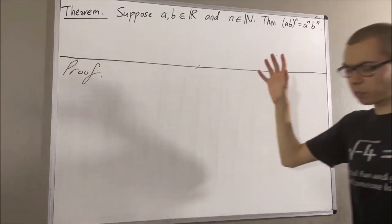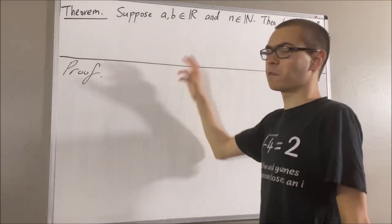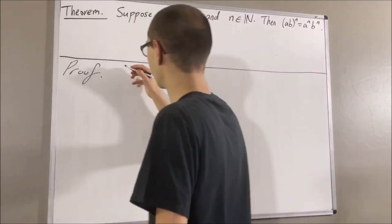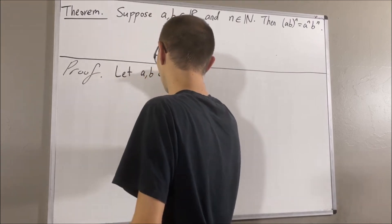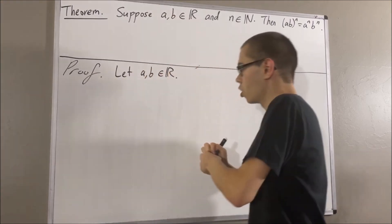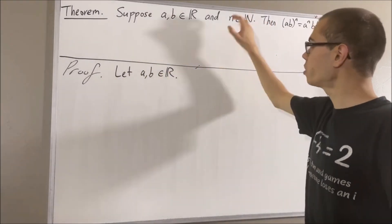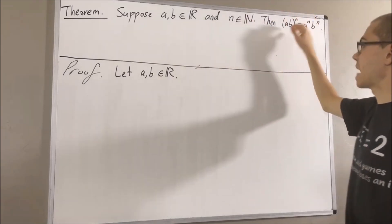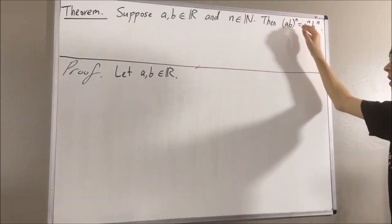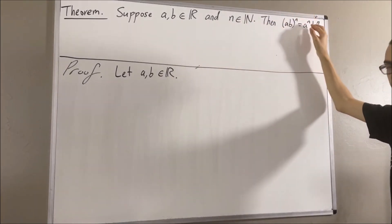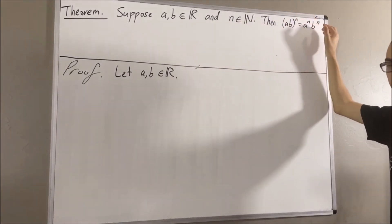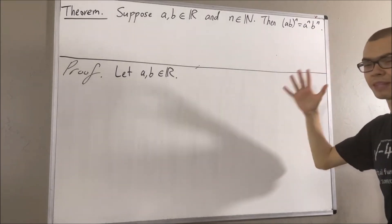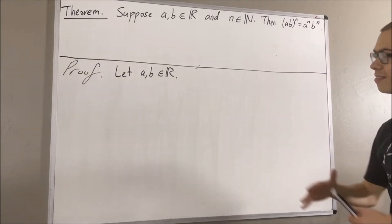To start off the proof, let's give ourselves two real numbers A and B. From here we're going to proceed to show for all natural numbers n, AB to the power of n is equal to A to the power of n times B to the power of n. And we're going to show that using mathematical induction.